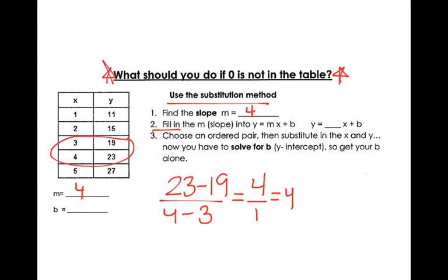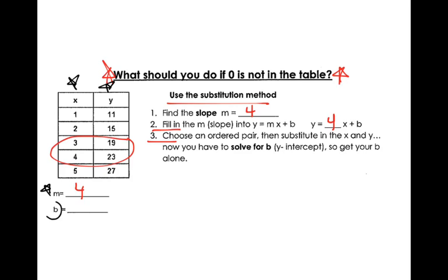Then it's telling me on number two, fill in the slope into the y equals mx plus b. So I get y equals 4x plus b. Then it says choose an ordered pair, then substitute in x and y. Now you have to solve for b to get your b alone. Okay, so what we're doing here is I'm going to start manipulating this equation. So I'm going to look at this and say, I have x's, I have y's, and I have an m. The only thing I don't have is the b. So if I substitute an x, a y, and an m, I can find the b.